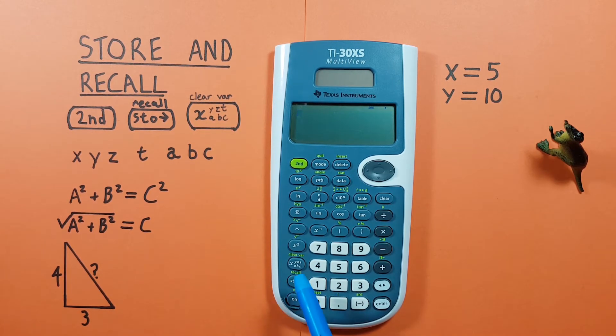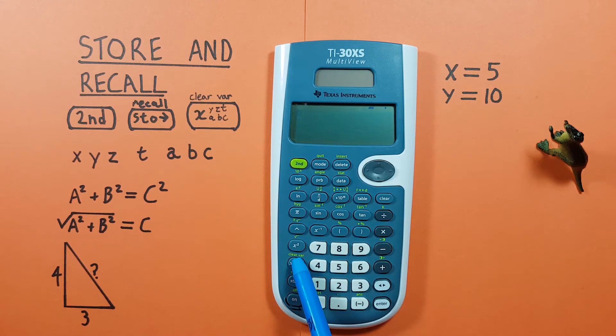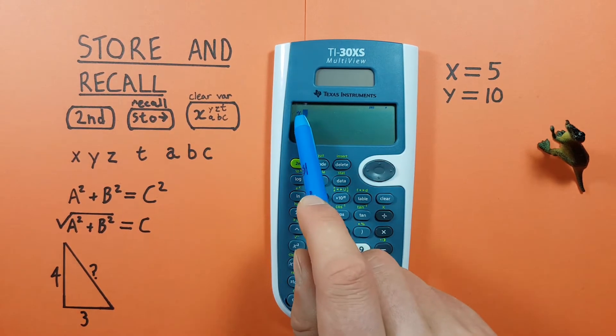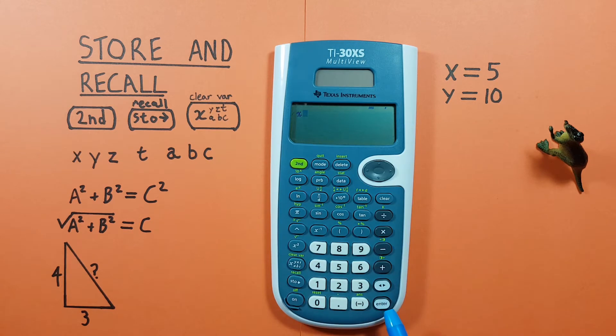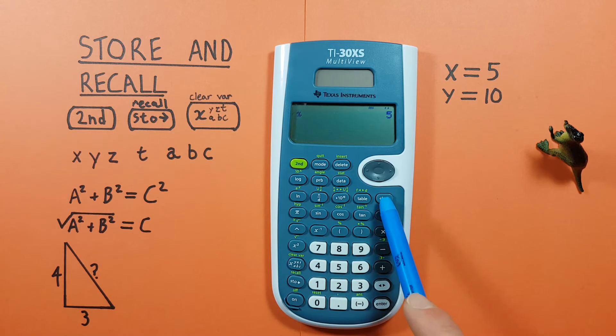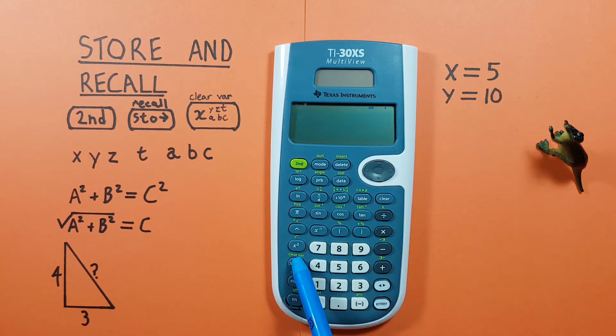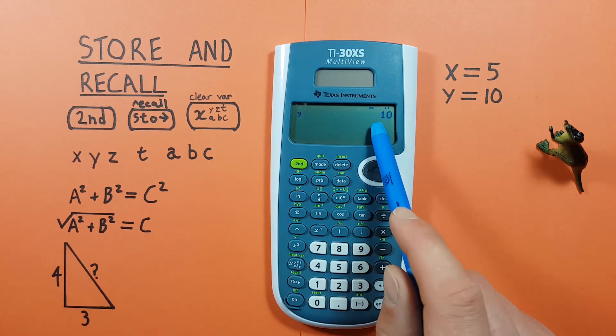To recall these values we use the memory slot key. To get the X value back we just hit the memory slot key once, see the X on the screen, and we can press enter. And yep, there's our 5. To recall our Y, we cycle to the Y, press enter, and there's our 10.